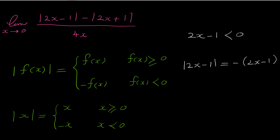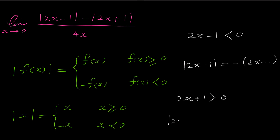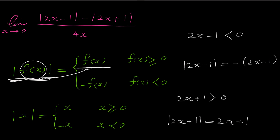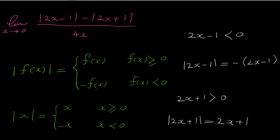But what about 2x plus 1? When x approaches 0, 2x plus 1 is greater than 0, because 2 times x is close to 0, so 2 times 0 plus 1 is positive. And because 2x plus 1 is greater than 0, the absolute of 2x plus 1 equals 2x plus 1 itself — by the definition, absolute of any expression equals the expression itself when the expression is positive.